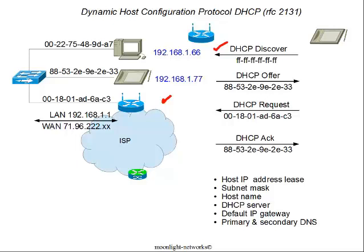The DHCP exchange occurs not only on the local area network but also on the wide area network. In the same way the tablet obtained an IP address from the router, the router can make a DHCP Discover broadcast within the ISP network to get a WAN IP address and learn about DHCP servers and DNS servers in the wider network. ISPs don't always configure routers this way, but it is a viable option for obtaining WAN address assignments.